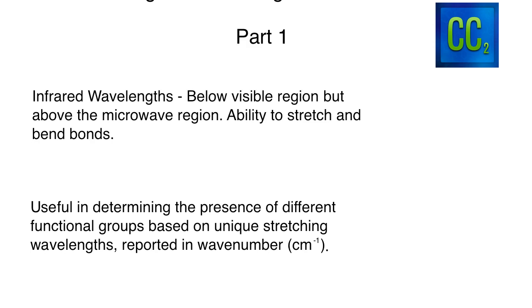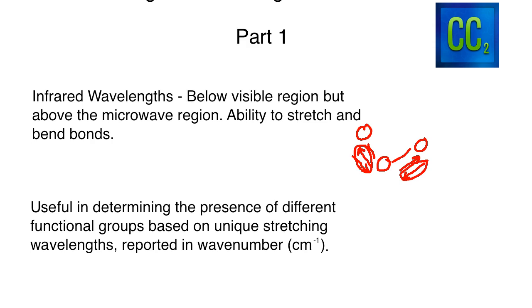When molecules start stretching, they can stretch symmetrically — think of two bonds both moving out and then back, like a slinky. You can also have an asymmetric stretch where one bond is going out while the other is coming back. Both symmetric and asymmetric stretching are important vibration modes observed in IR spectroscopy.